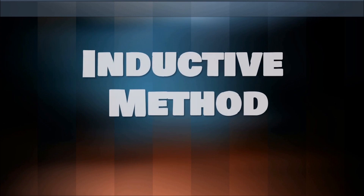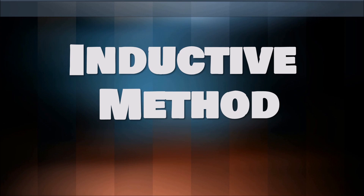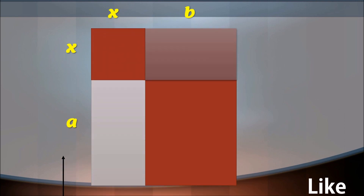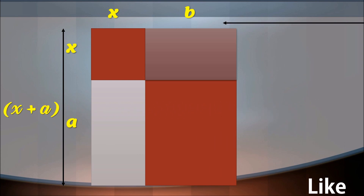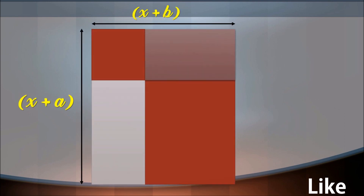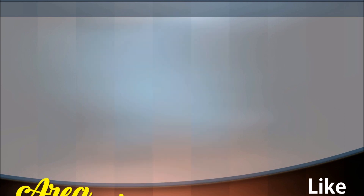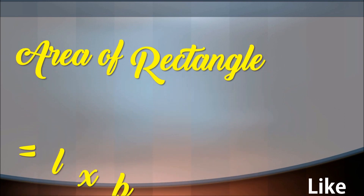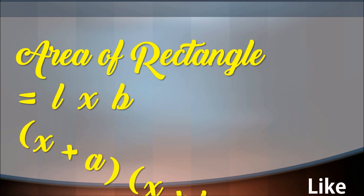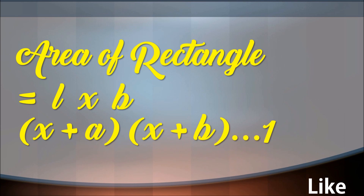We are using the inductive method, in which the formula is derived from examples. Let us take a rectangle which is divided into four parts such that we get one square and three rectangles. Its length is in two parts, so total length is x plus a. The same way, total breadth is x plus b. Area of rectangle is equal to length into breadth. Therefore, area of this rectangle is x plus a into x plus b. This is our condition number one.